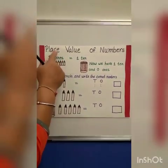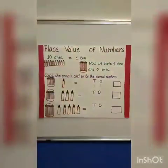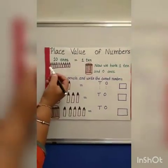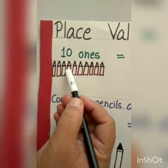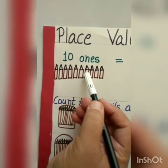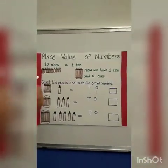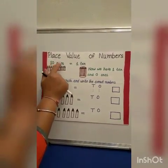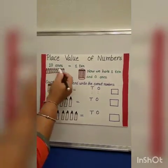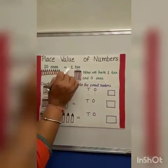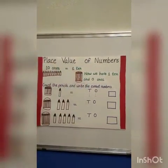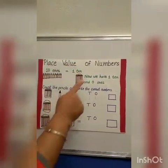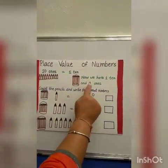Now I will teach you about place value of numbers. First we will count all the pencils. How many pencils are here? 1, 2, 3, 4, 5, 6, 7, 8, 9, 10. 10 pencils will make 10 ones. And if we put all the pencils together in one bundle, it will make 1 ten. So 10 ones together make 1 ten. Now we have 1 ten and 0 ones.